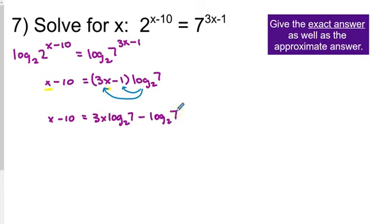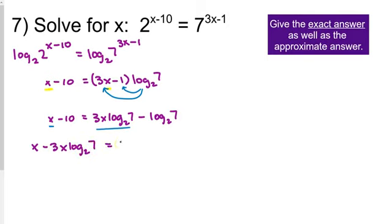Now the next step is to get all the x terms on one side. We have two x terms: x and 3x log base 2 of 7. Those go to one side, the other terms go to the other side. I'm leaving x on the left and subtracting 3x log base 2 of 7, then adding 10 to both sides, so we have 10 minus log base 2 of 7 on the right. Once you have all x terms on the same side, factor out x.